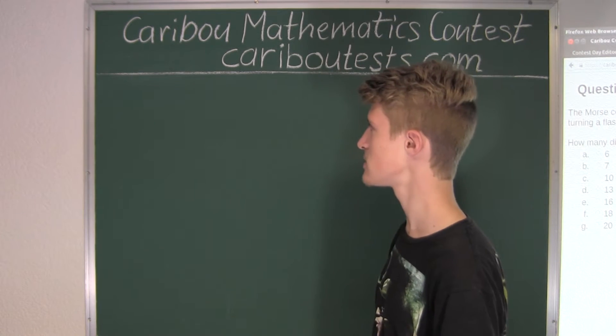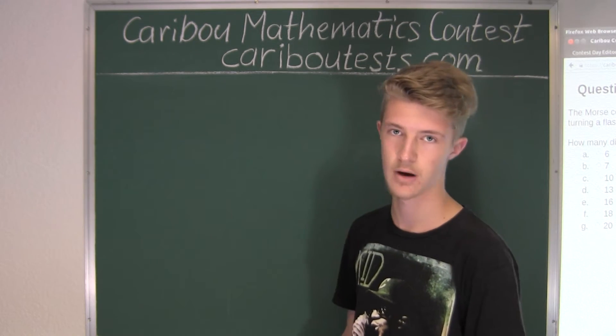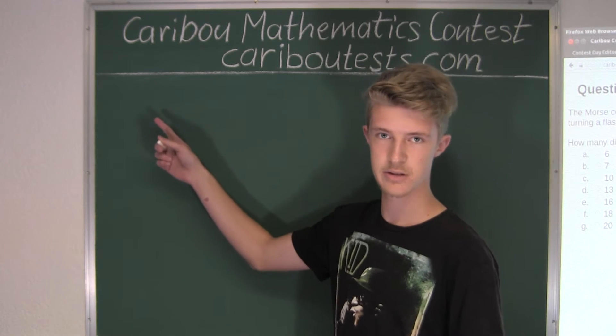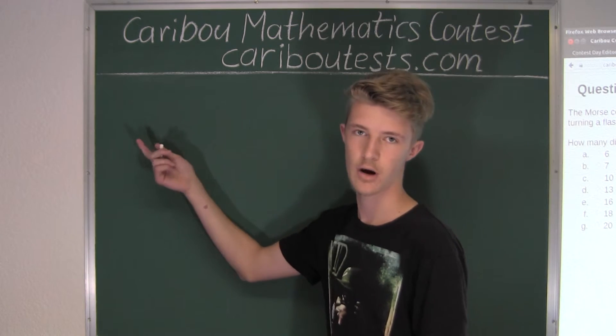Alright, so let's start by writing down the smallest possible number, and that would be 0, 0, 0, 1, 1, 1, which would give us 111.